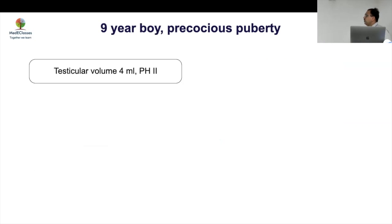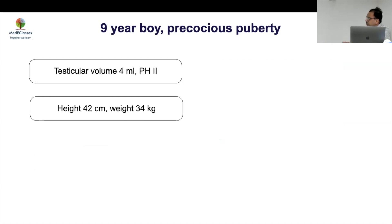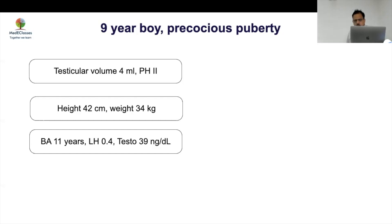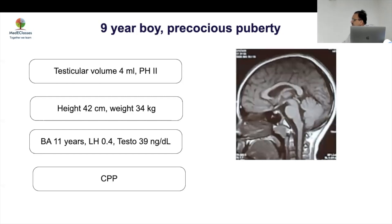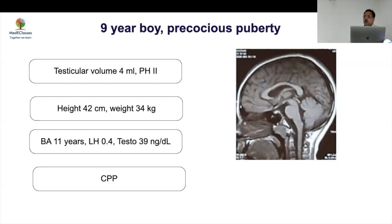Case 2: A 9-year-old boy with precocious puberty, testicular volume 4 mL, pubic hair stage 2, height 142 cm, advanced bone age, LH 0.4. All boys with central precocious puberty must have an MRI — not all girls, as after age 6 the chance of a lesion is much less. MRI showed a cystic lesion. The most common cystic lesion causing precocious puberty is an arachnoid cyst. If it causes raised ICP it should be drained; otherwise, give GnRH analogs.